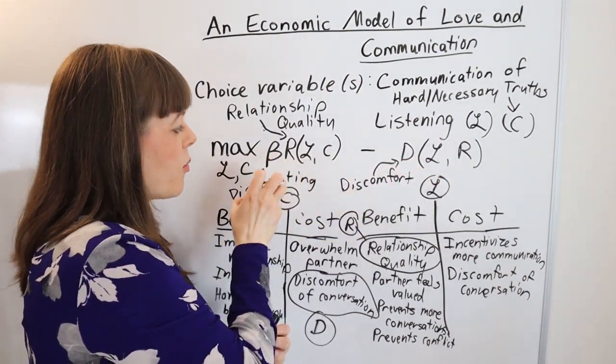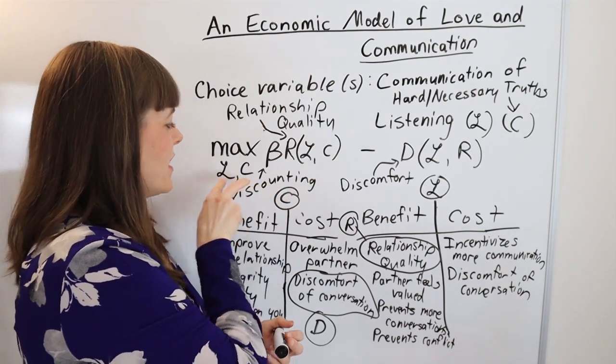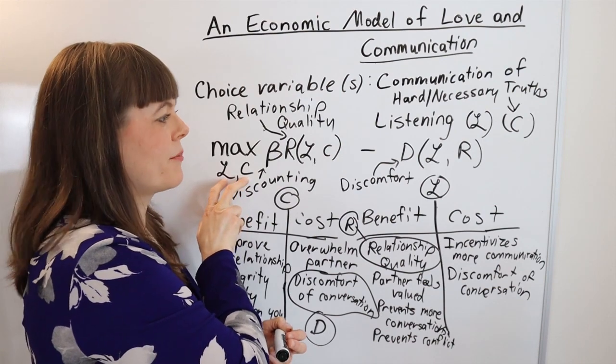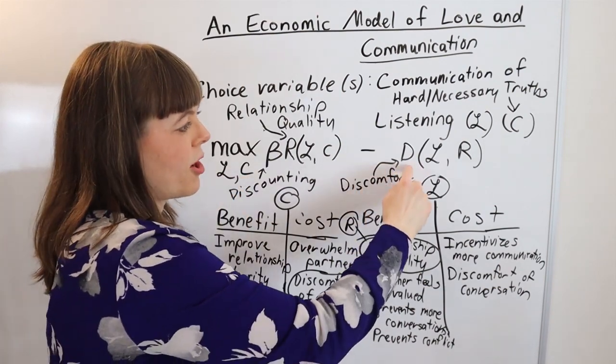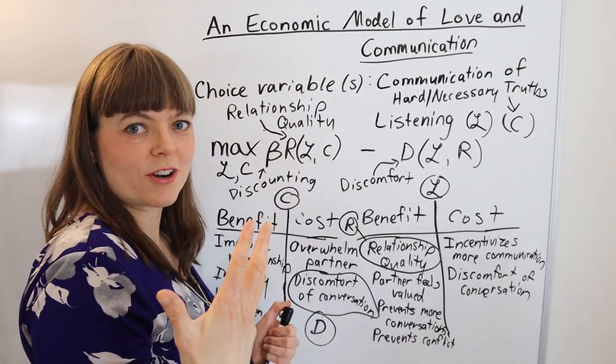So the lower beta is, or the more you're discounting the future, the less likely you are to listen well and communicate well, because you care so much more about the discomfort of the now than the payoff in the future.